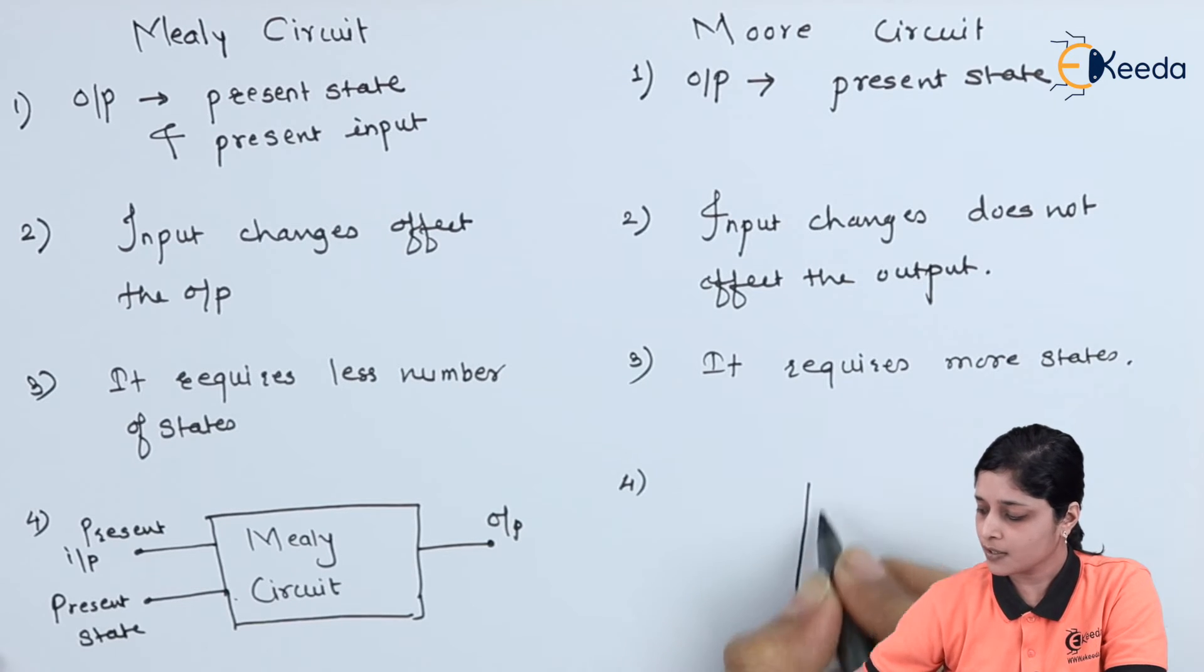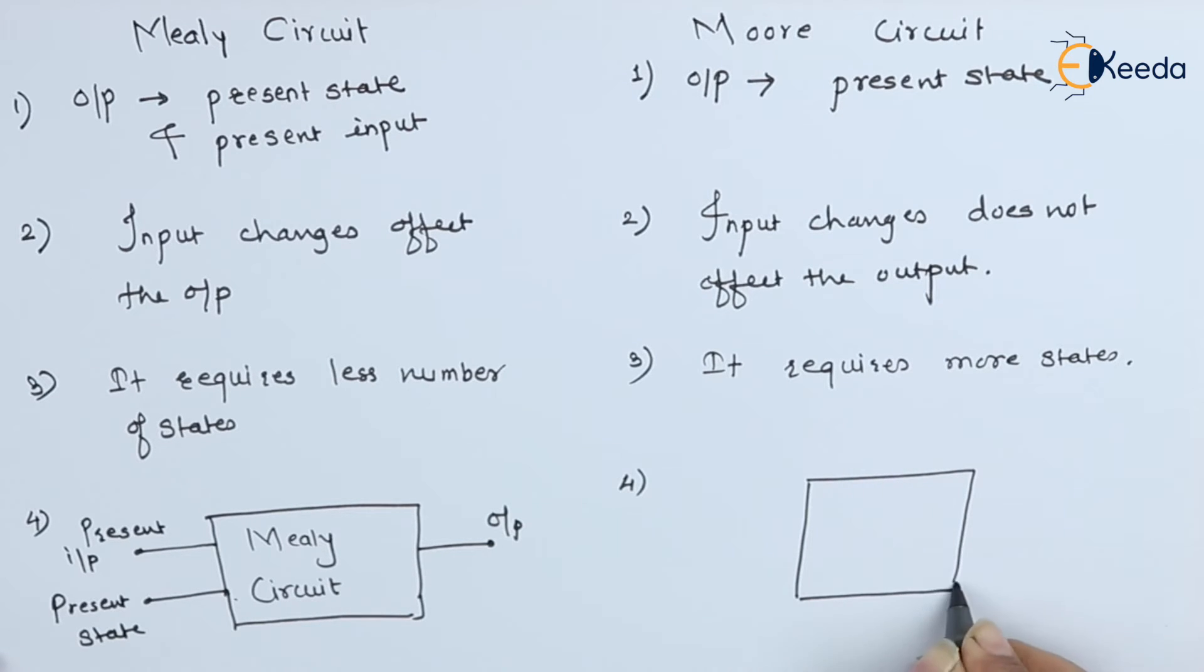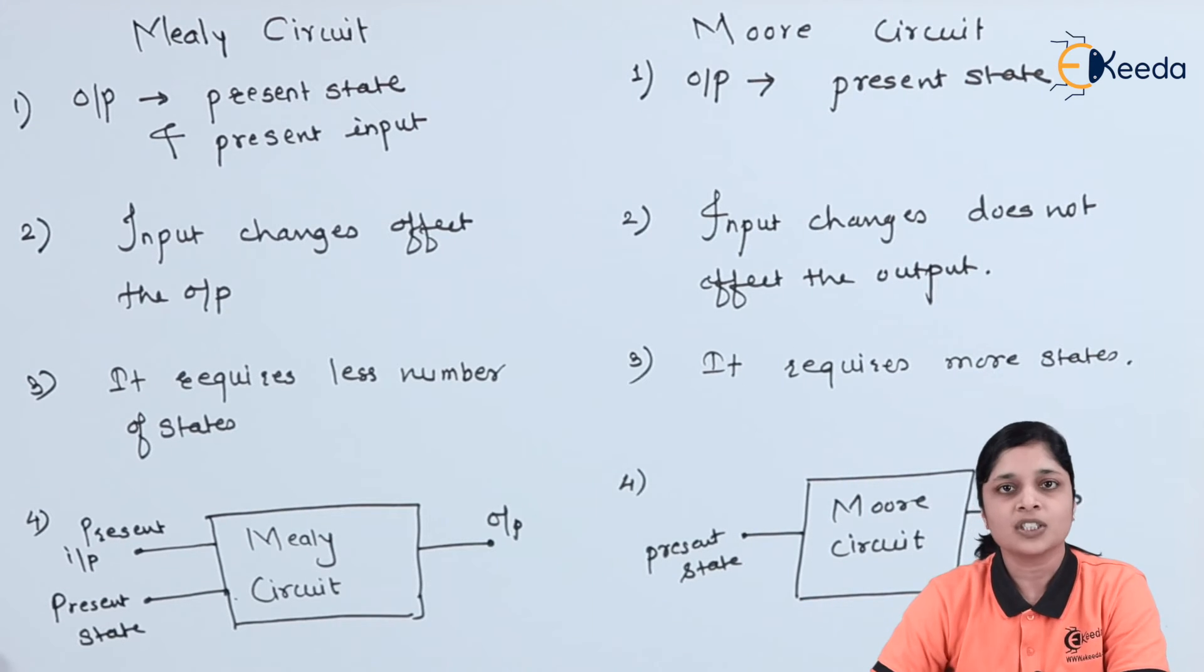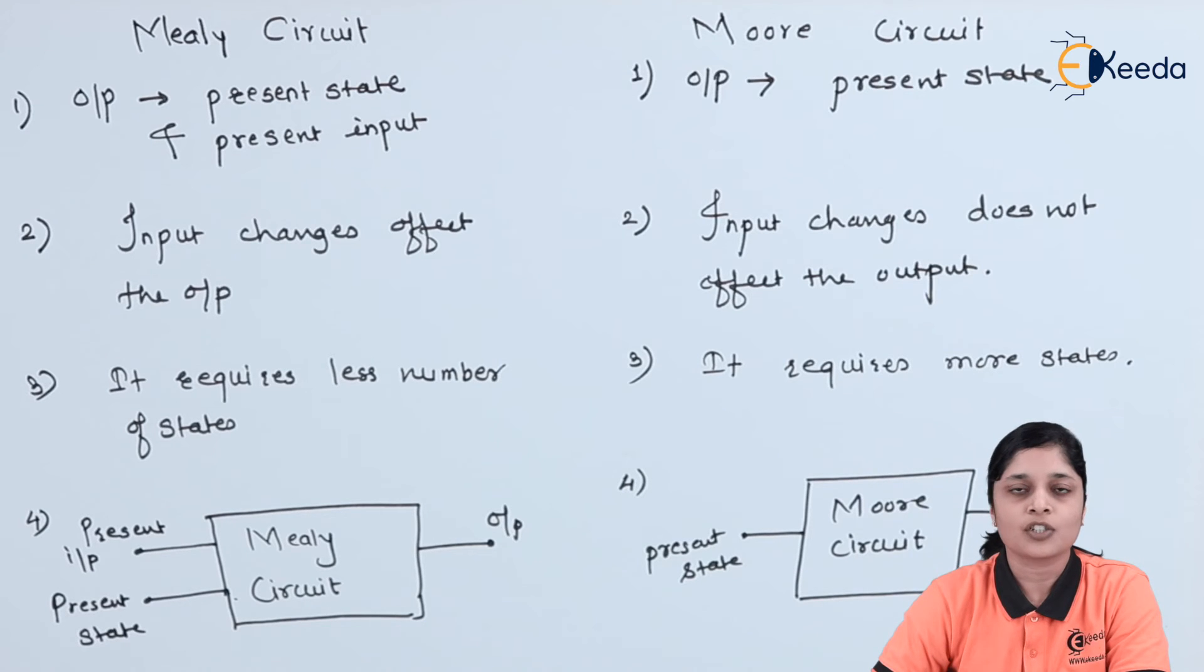Now for Moore circuit, this is your circuit, this is your block diagram for Moore circuit. Now this circuit depends only on what? Present state. Moore circuit does not depend on the present input. It will give the output based on the present state only.